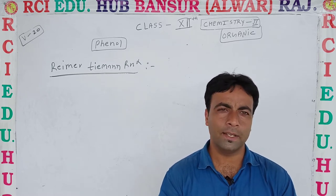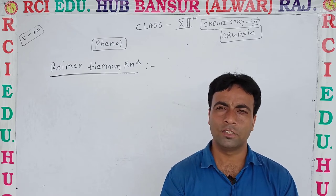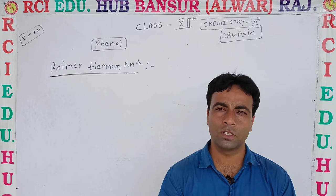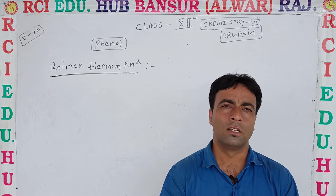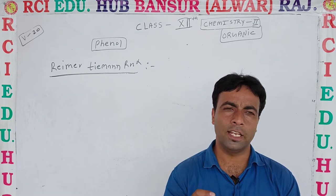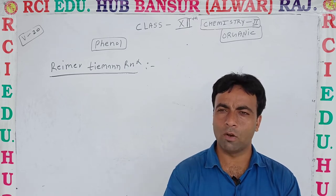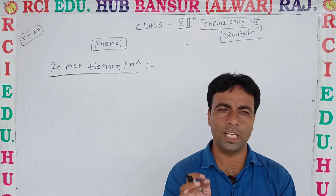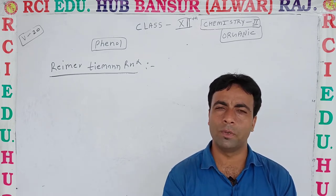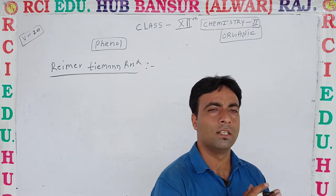If we compare, instead of CHCl3 we use CCl4 — carbon tetrachloride — then there will be formation of carboxylic acid, and that is called salicylic acid. So if chloroform is used, benzaldehyde is formed; if CCl4 is used, salicylic acid is formed. Let's continue and see both types of reactions.